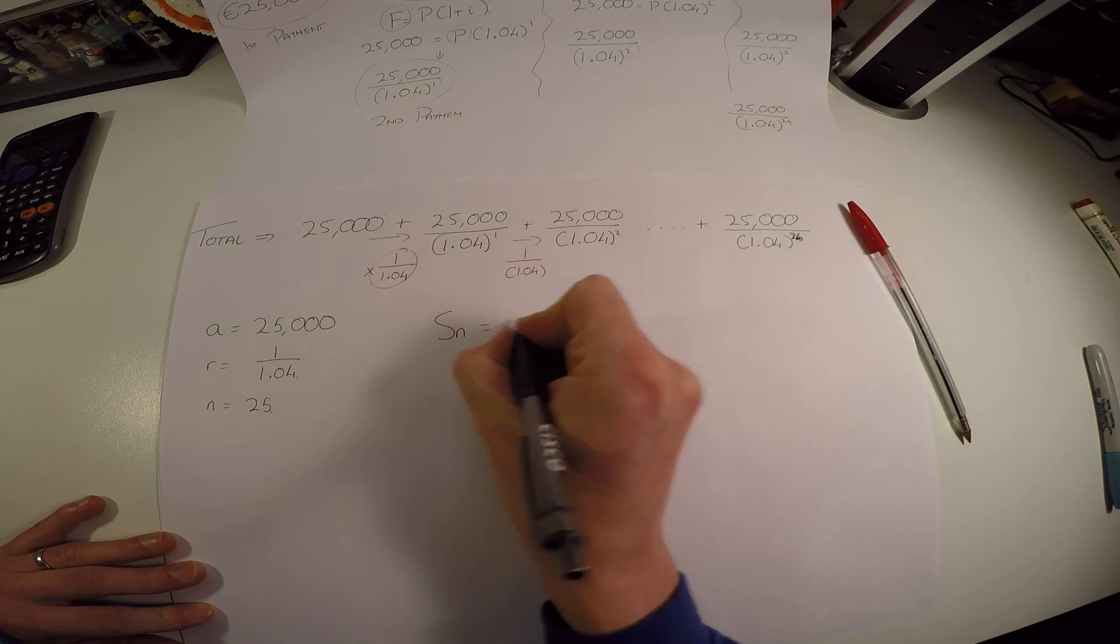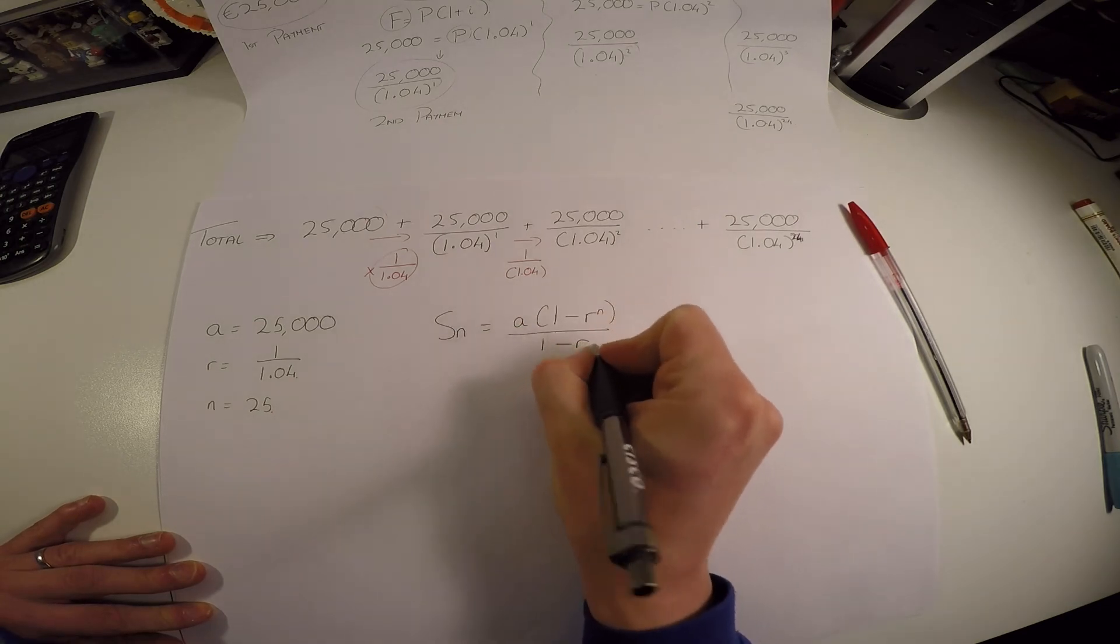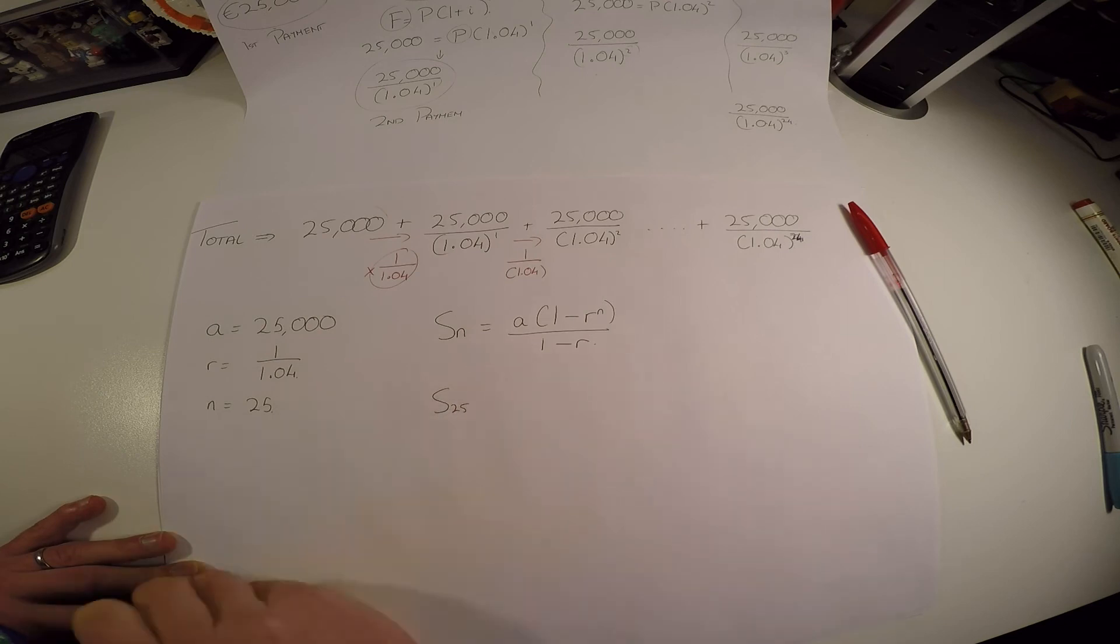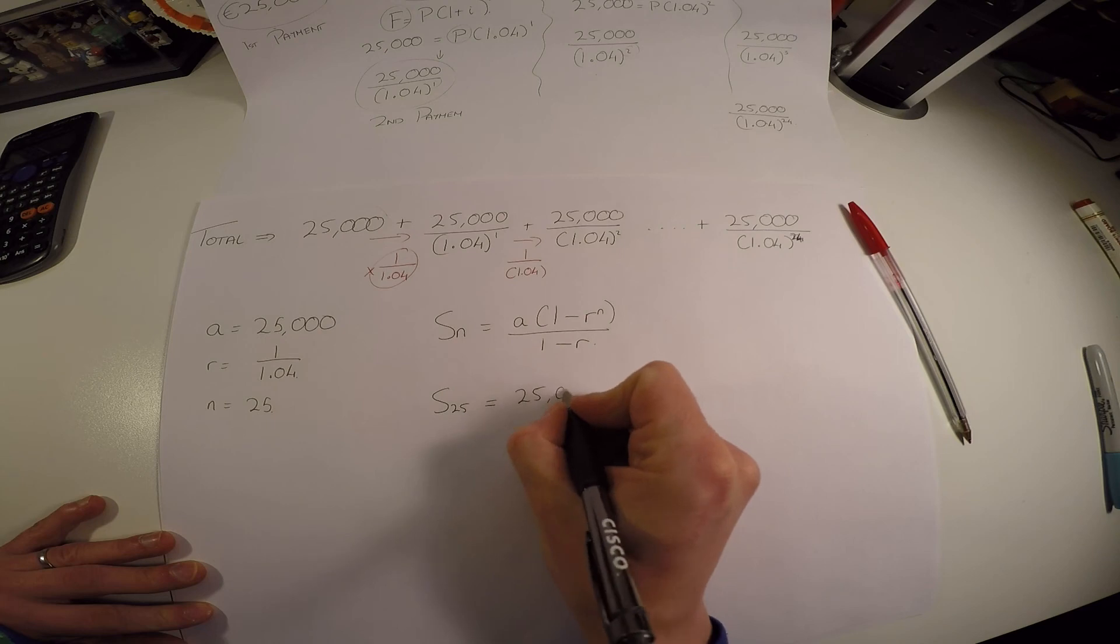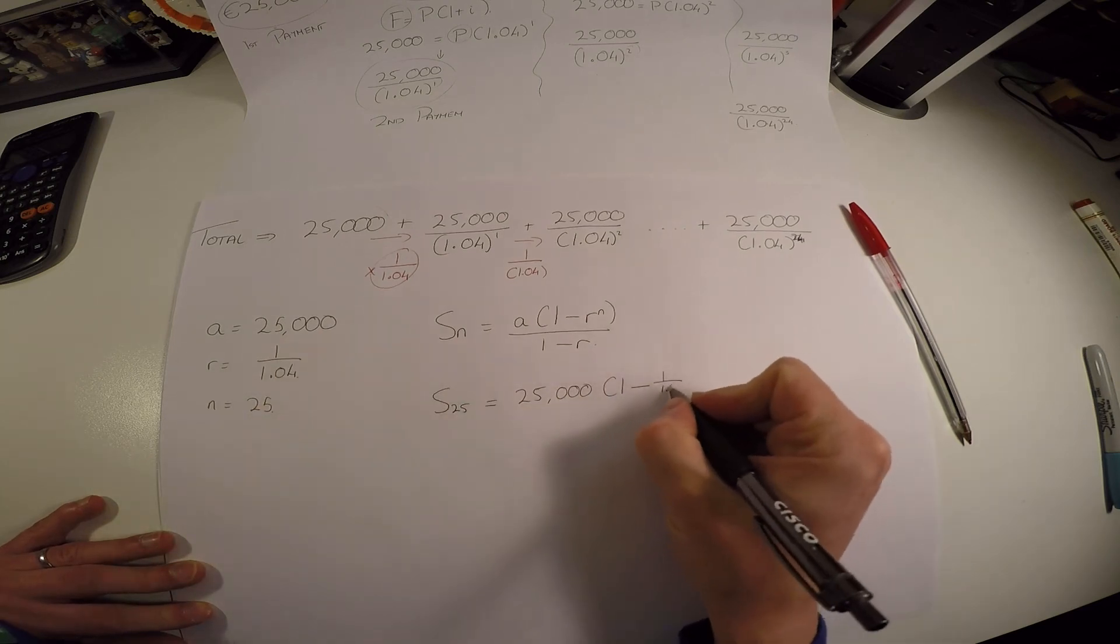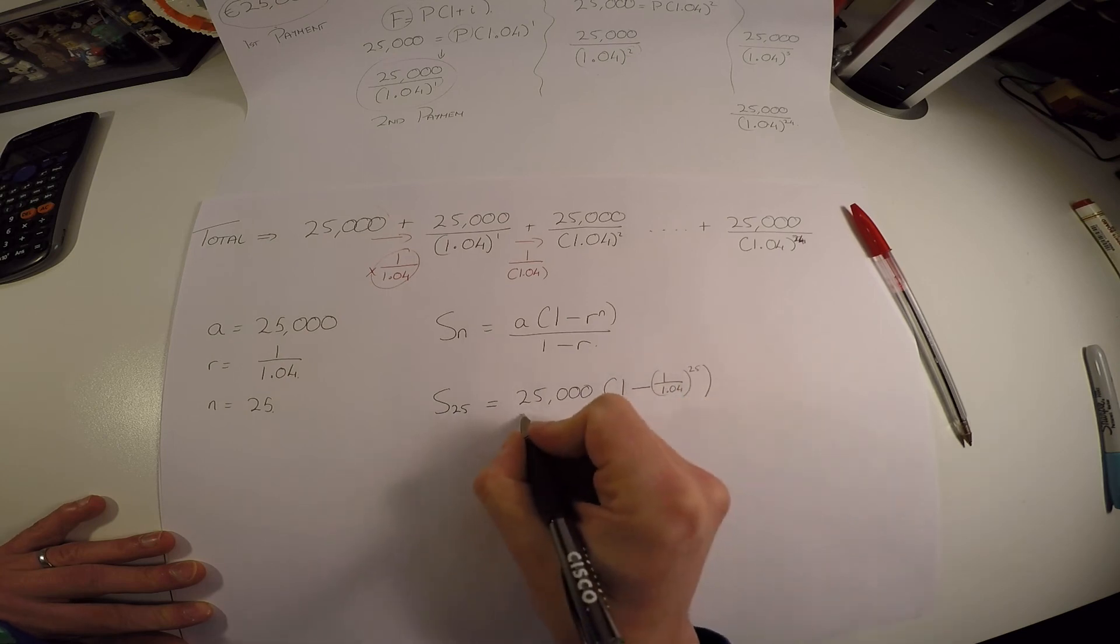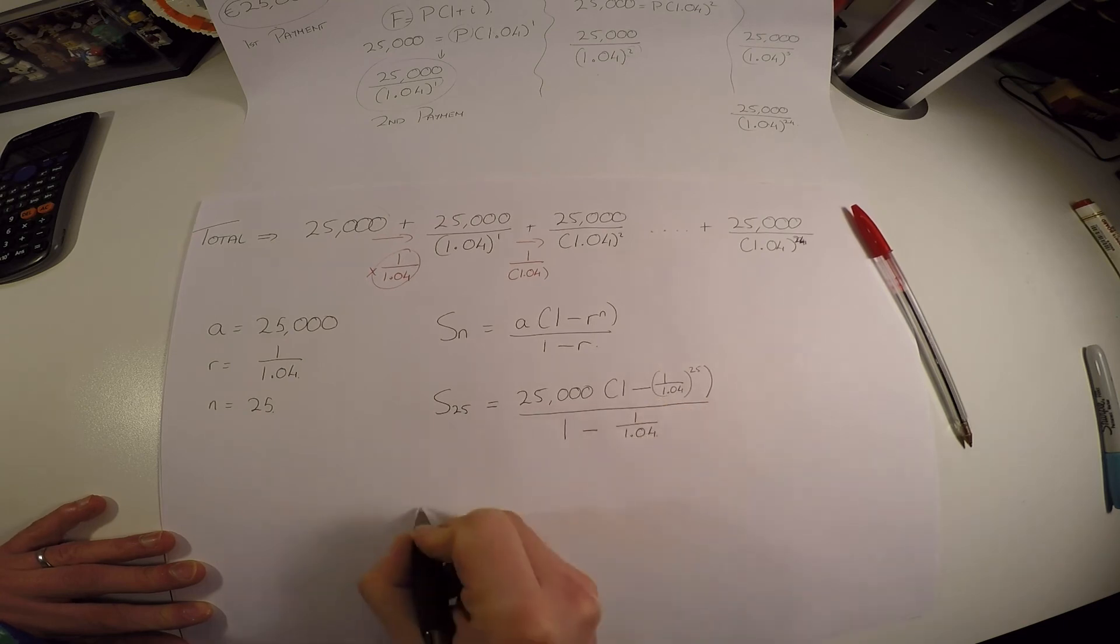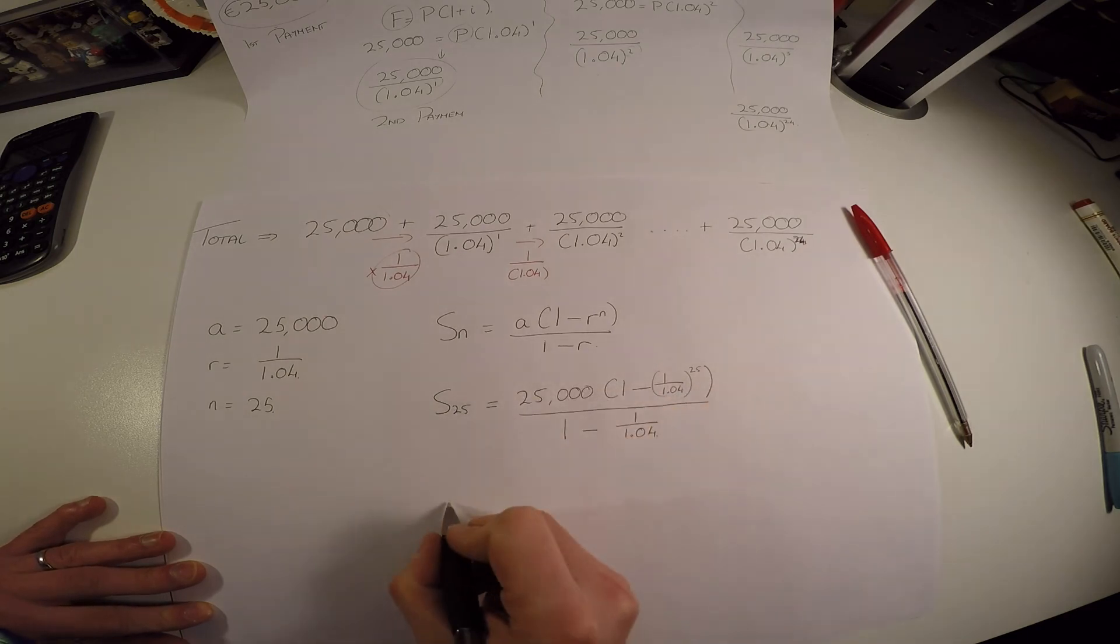That is S_n equals A times (1 minus r^n) over (1 minus r), given to you in your log book. We can fit in all this information with what we have here. So we're looking for S_25, and we have a first term of 25,000, we have 1 minus a ratio of 1 over 1.04 to the 25, all over 1 minus 1 over 1.04. Maybe you should definitely try this. Pause the video and try and put this into your calculator and let's see if we get the same answer.